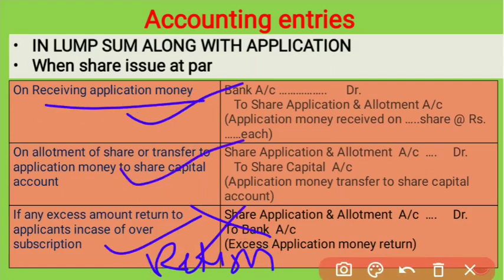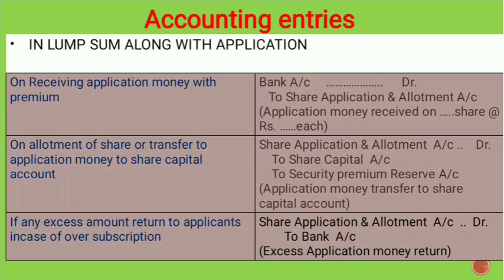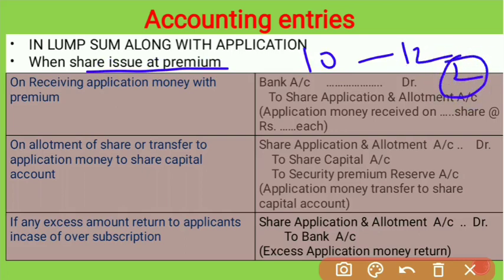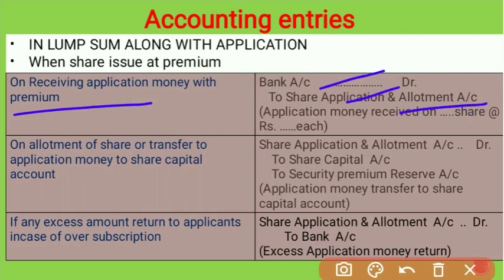First the application money is received, and then it is transferred to the share capital account. The next case in the lump sum method is when the company collects the full amount with the application but the shares are issued at a premium. For example, a ₹10 share is issued at ₹12, so ₹2 is the premium. When application money is received at premium, the entry is: Bank Account debit to Share Application and Allotment Account — same as the at-par case, but here the amount will reflect ₹12 per share.